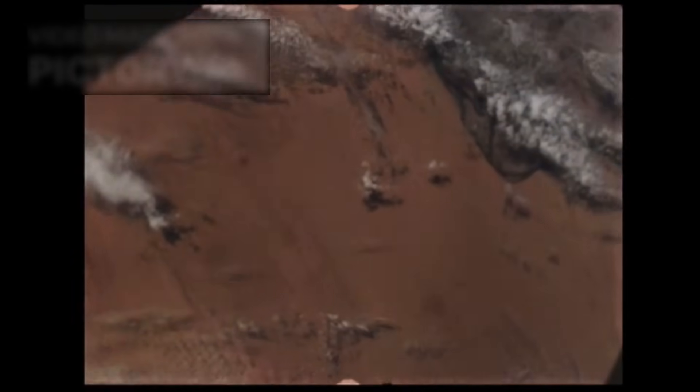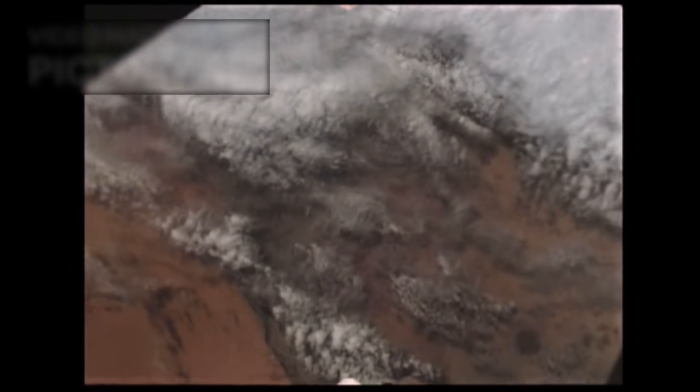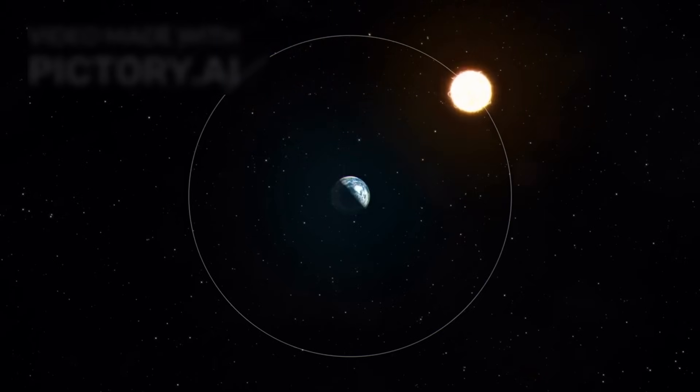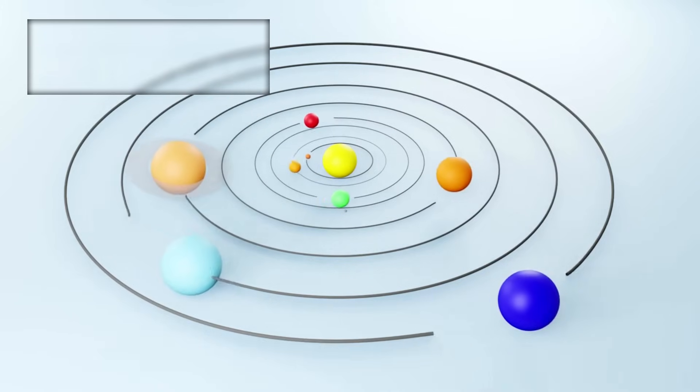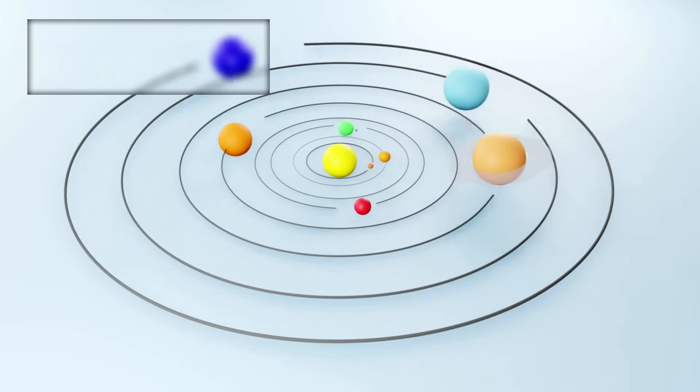For the first time, scientists had measurements from two different vantage points beyond the edge of our solar system. The data revealed just how dynamic and chaotic the boundary of heliosphere truly is. It's not a neat, spherical shell. It's distorted and shaped by the Sun's interaction with the interstellar medium.